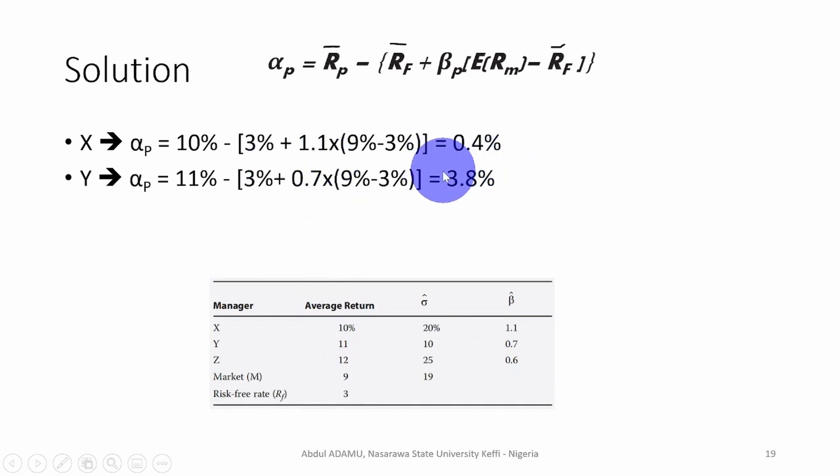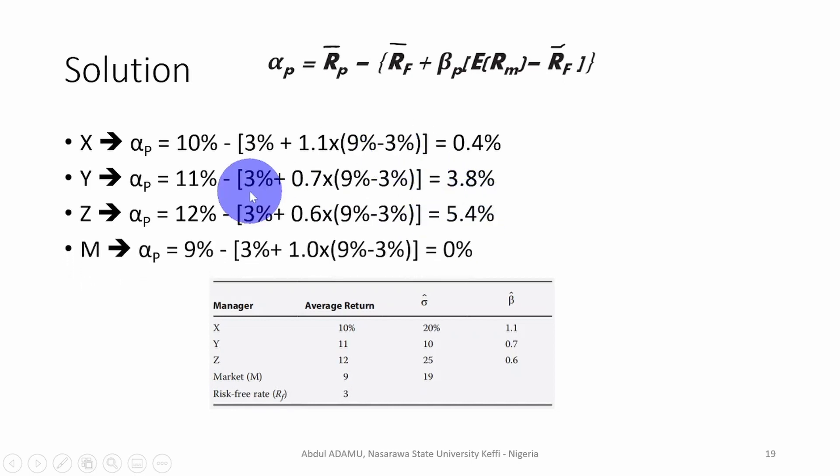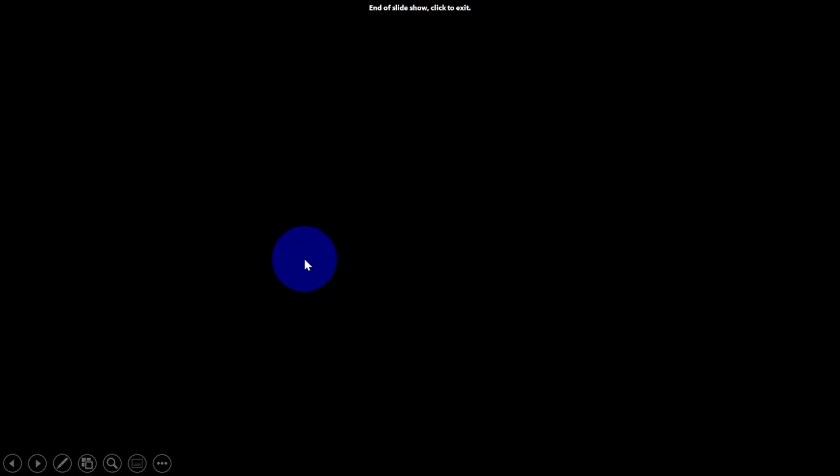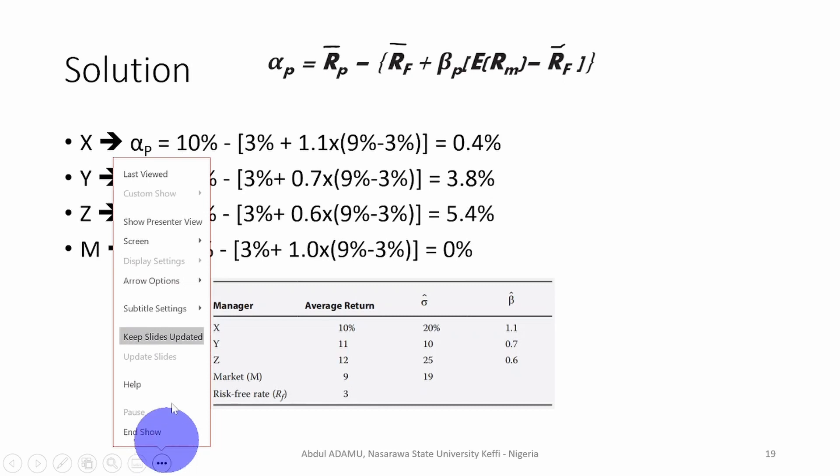For Z, the return is 12%. Then we do the CAPM with 3% risk-free rate and alpha of 0.6. So once we plug in, we have 5.4%. For the market portfolio, it's 9%. Since the alpha of the market is always equal to zero, we plug it in and we have 9%. That is why the Jensen alpha equals zero as expected. So we can go to our Excel to see how these are calculated.